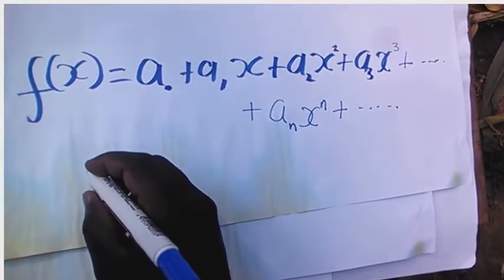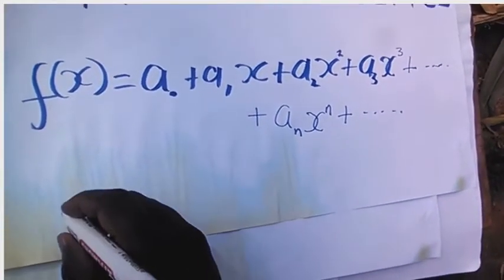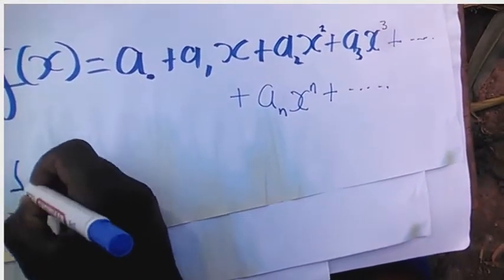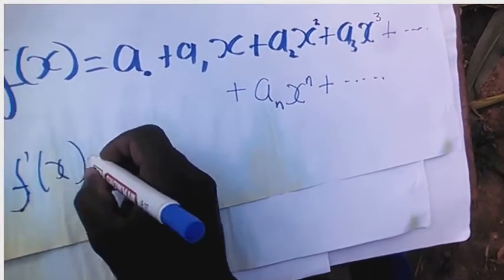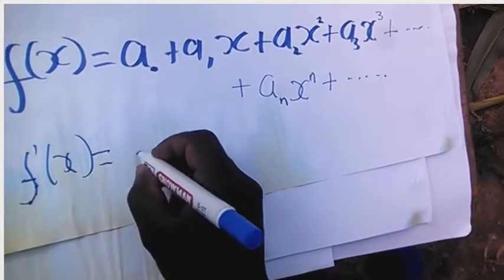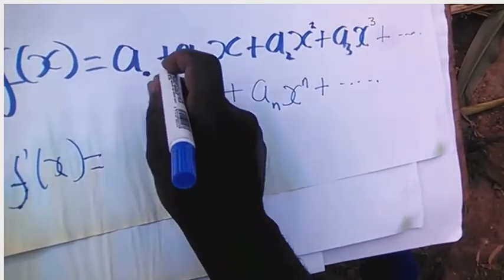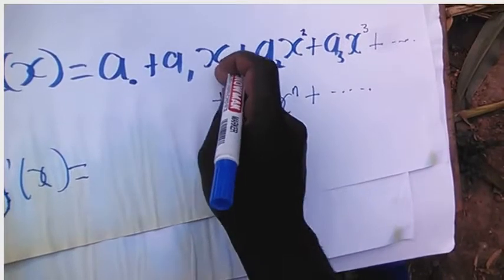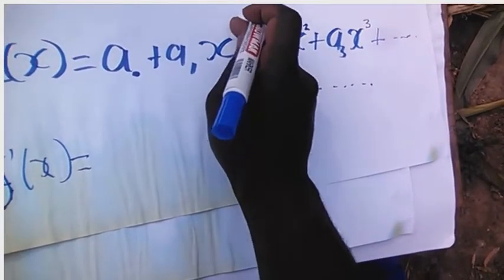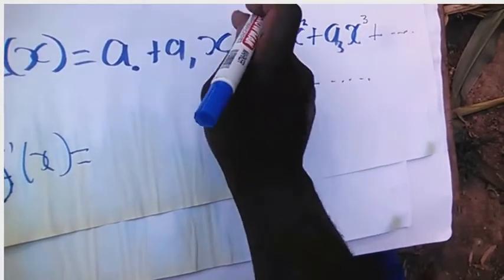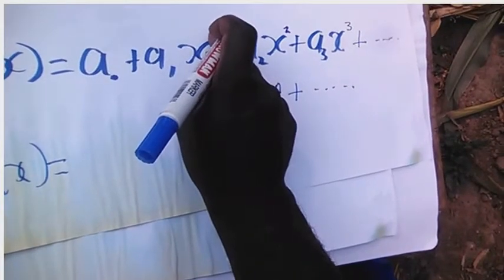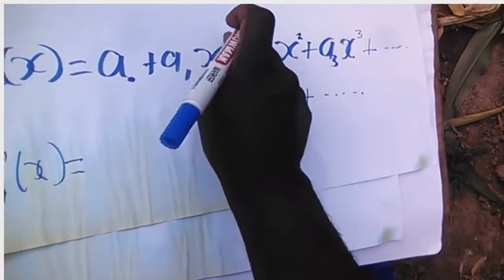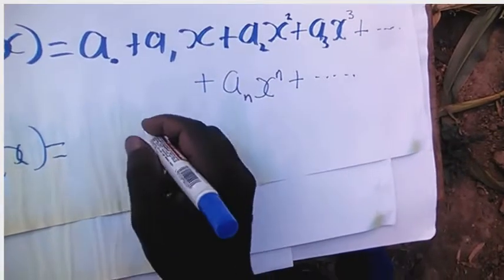When you differentiate this function once, it will give F prime of x. Here the derivative with respect to x of a constant term is 0. The derivative of A1x — because this is power 1 — so 1 times A1 gives A1. You reduce the power by 1, it becomes x to the power 0, which is the same as 1.